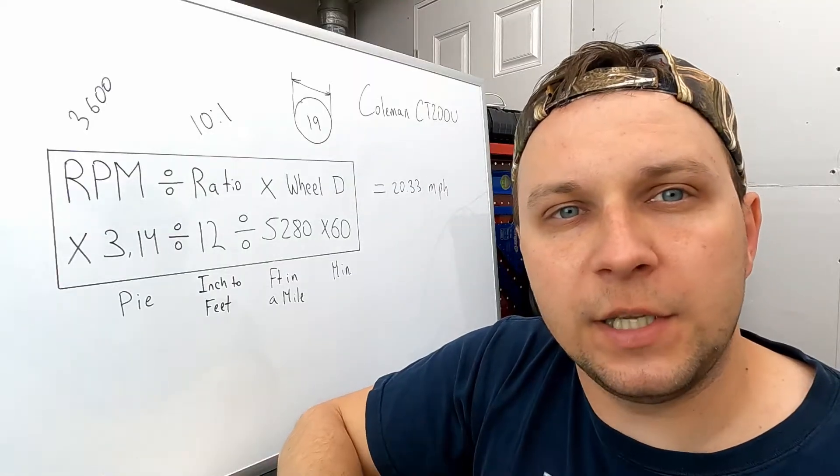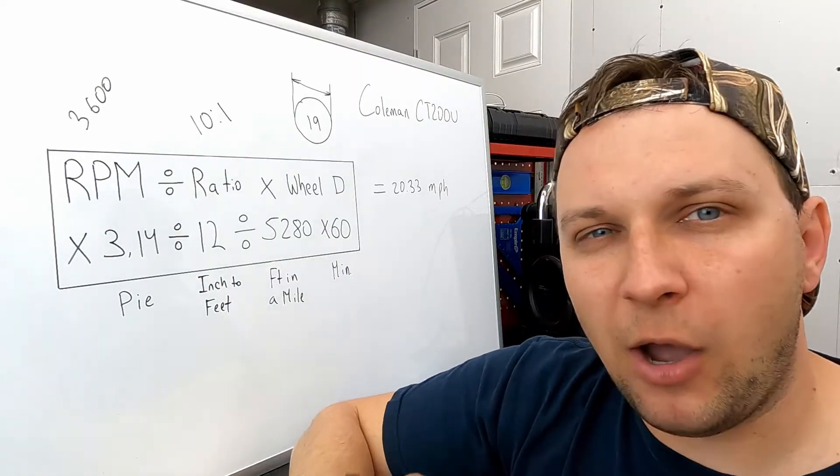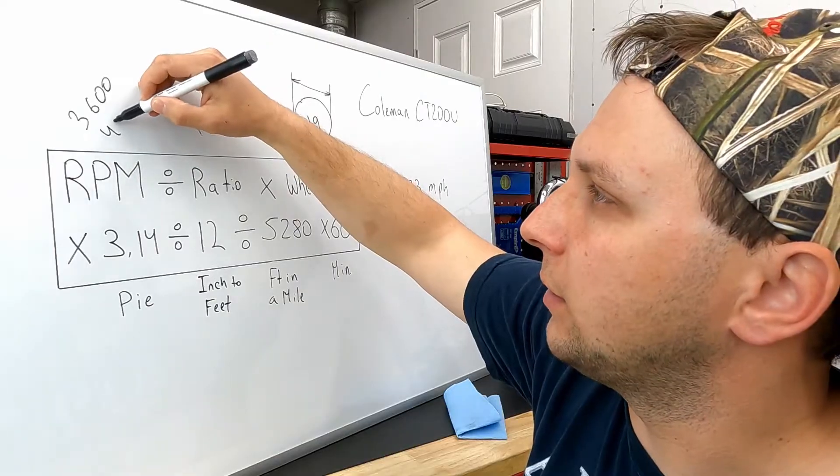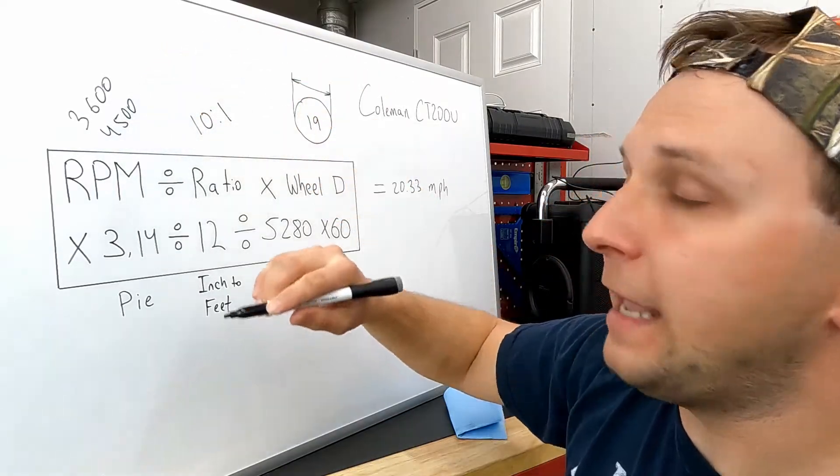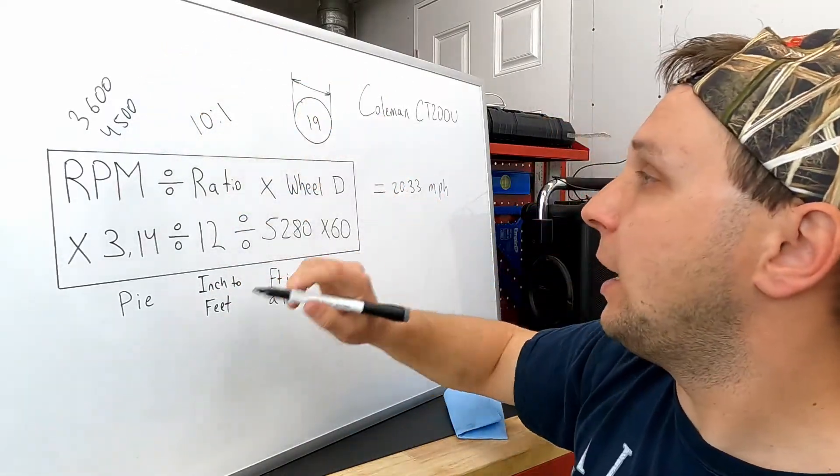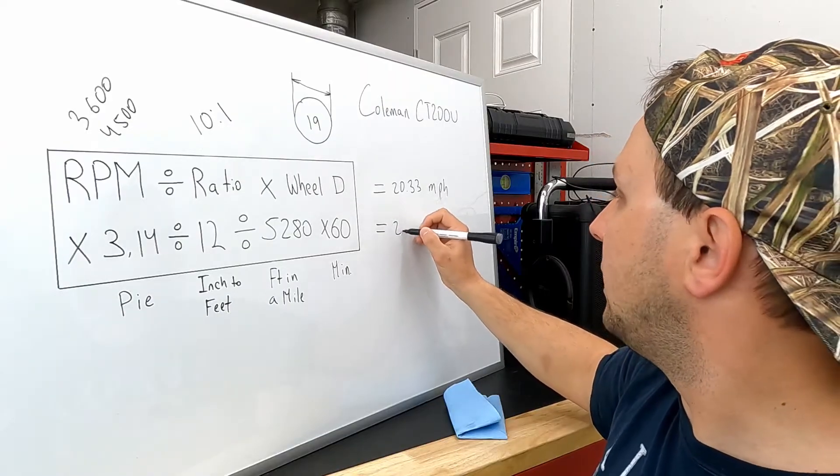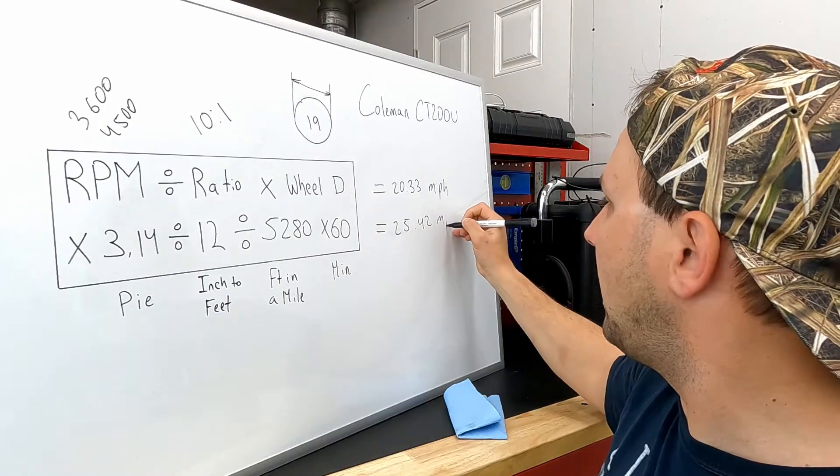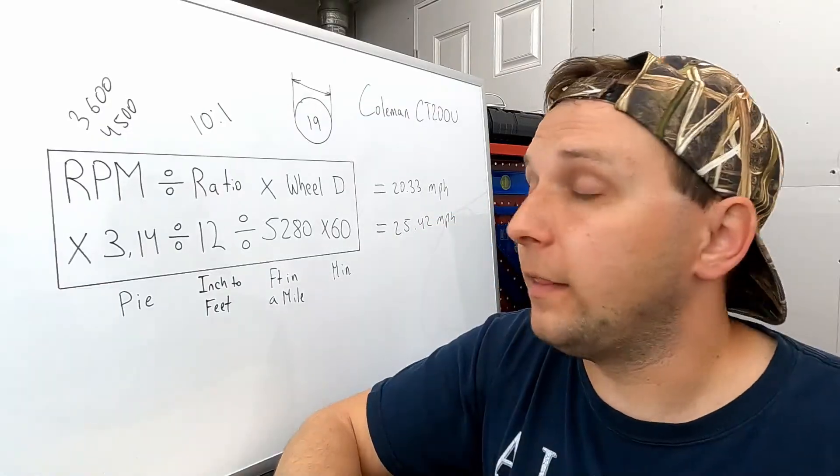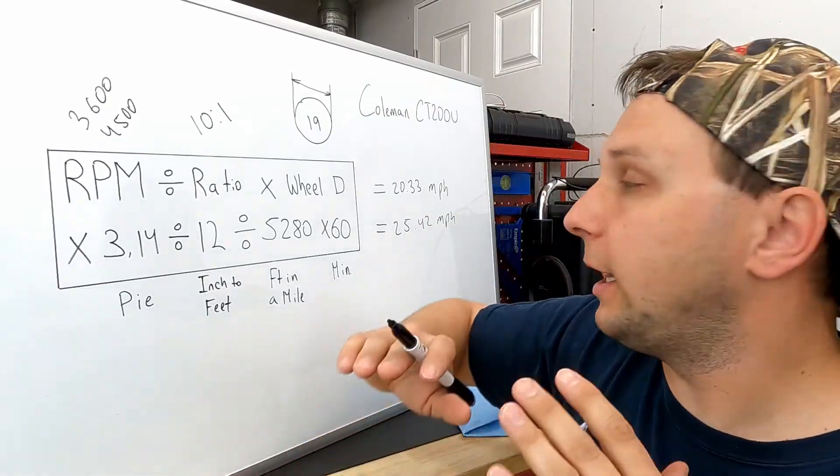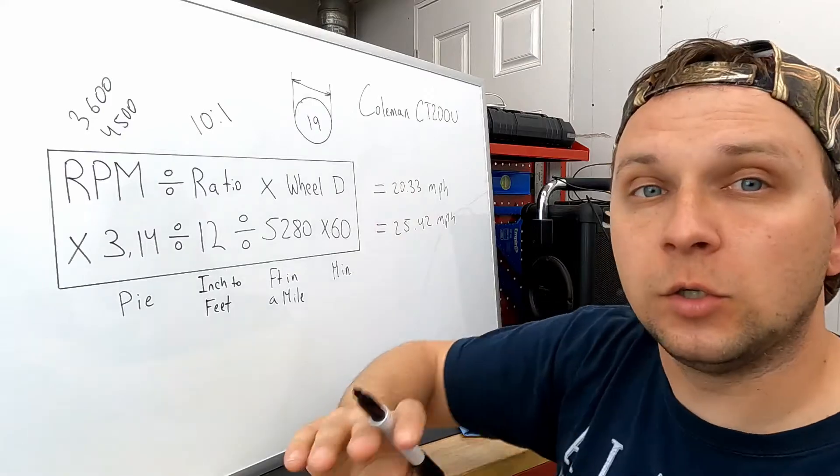Now let's say we're gonna bypass the governor. By doing that we're gonna increase our RPMs up to about 4500. Now if we do the math, we're gonna end up with 25.42 miles per hour. So with governor bypassing, we're gonna increase our speed from 20 to 25 miles per hour.